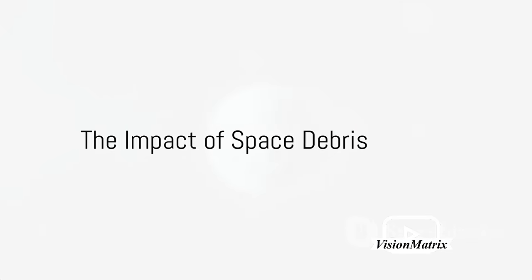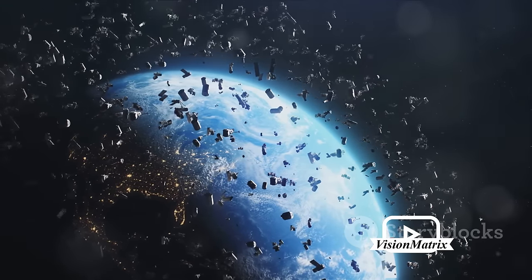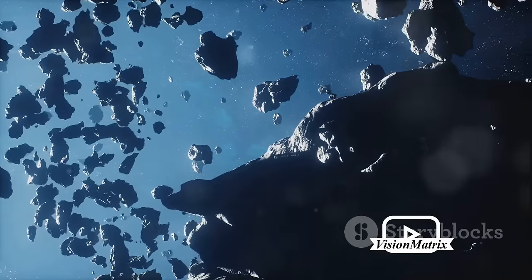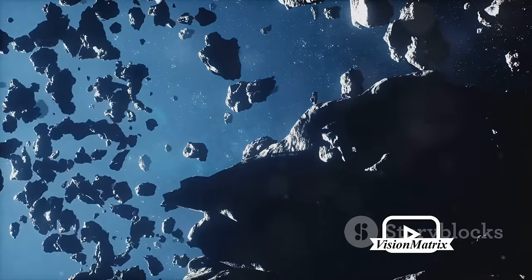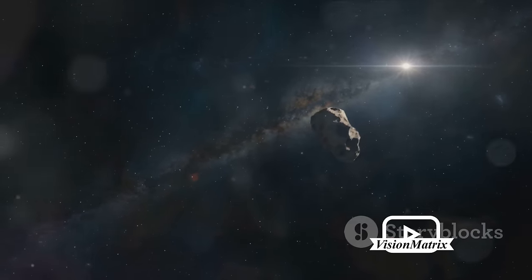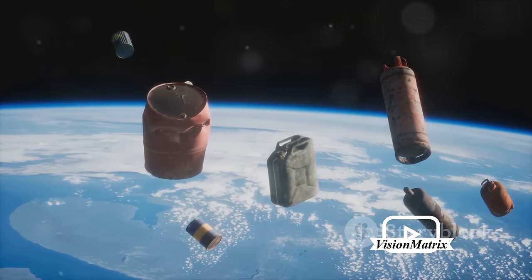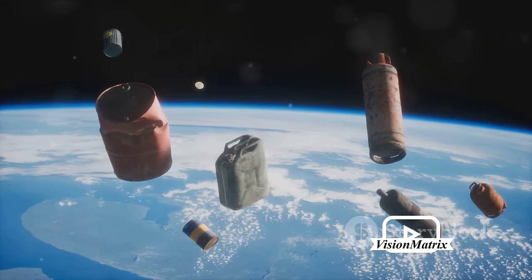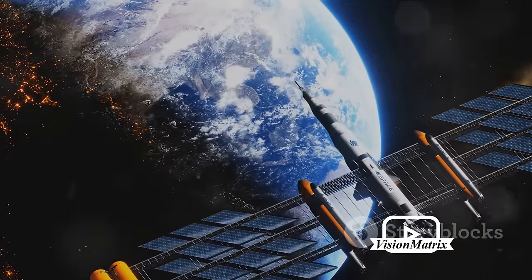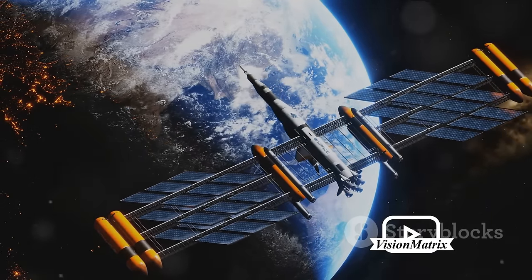Transition now from history to a pressing modern concern, space debris. It's the silent saboteur of space, a swarm of defunct satellites, spent rocket stages, and fragments from disintegration and collision. This buzzing cloud of cosmic clutter poses a significant threat to both manned and unmanned space missions. Imagine a tiny piece of metal, no larger than a cherry pit, hurtling towards your spacecraft at speeds of up to 17,000 miles per hour. The damage could be catastrophic. To combat this, space agencies worldwide are continuously tracking over 22,000 objects in orbit.